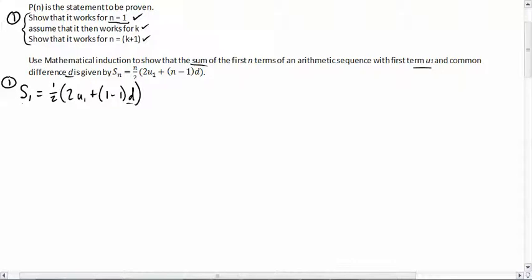Recognize that if we're doing the sum of the first term, there's only one term, and that term just happens to be u1. From here, we'll go one half times... I've got to do this stuff in the parentheses first. Note that one minus one is zero. Zero times d is zero. So when I add that zero, it's just going to stay 2u1. When I do half of 2u1, of course, that gives me u1. So check. We've shown that it works for n1.